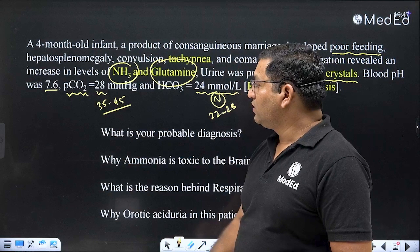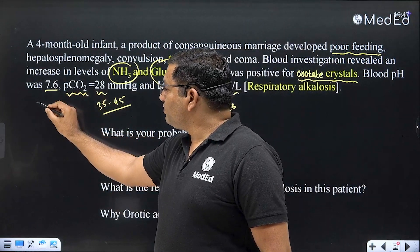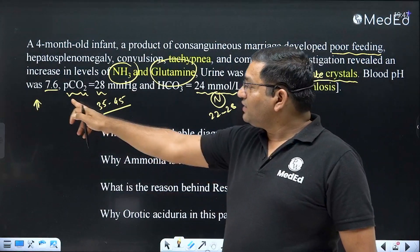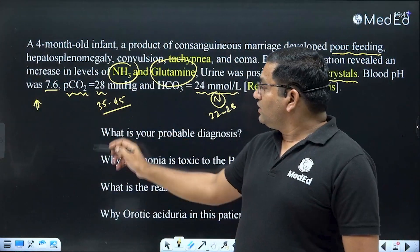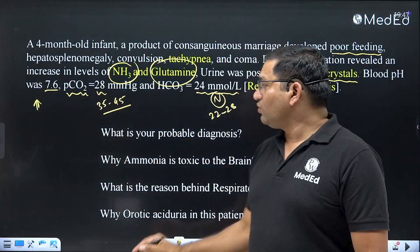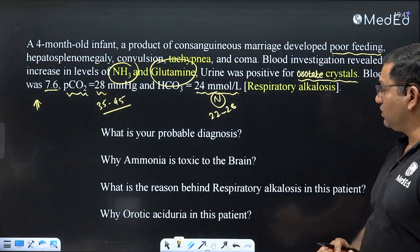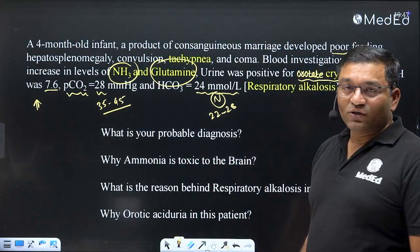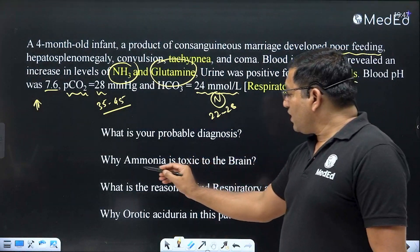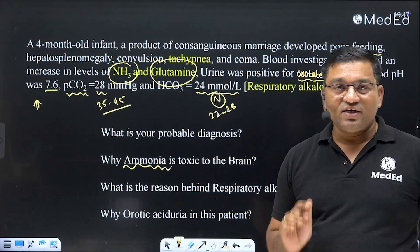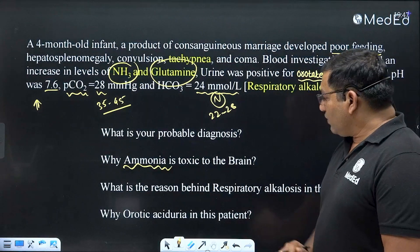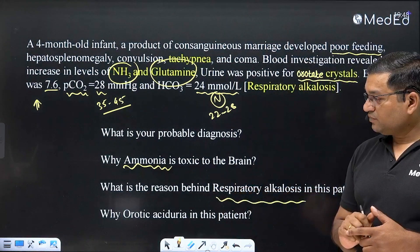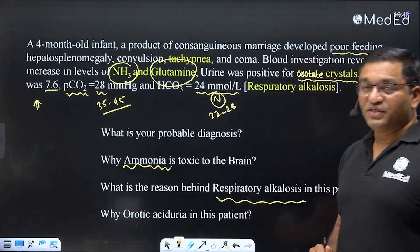PCO2 is the respiratory component. A pH of 7.6 means pH increase, indicating alkalosis. Since PCO2 is decreased, this is respiratory alkalosis. Now, the sub-questions for this case are: What is your probable diagnosis? Why is ammonia toxic to the brain? What is the reason behind respiratory alkalosis in this patient? And why is there orotic acid urea in this patient?